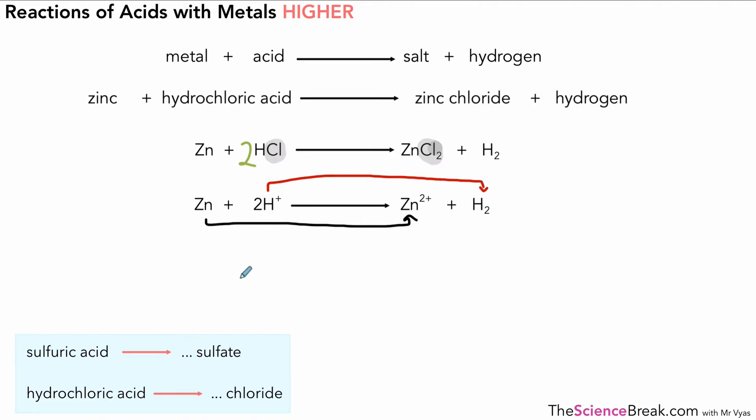If we deal with the zinc first, we've got zinc which becomes zinc ions with the charge of 2 plus, and two electrons. Our two hydrogen ions become hydrogen atoms—and in fact a hydrogen molecule—by gaining two electrons. So the top one was the oxidation (oxidation is loss of electrons) and the second one was reduction.